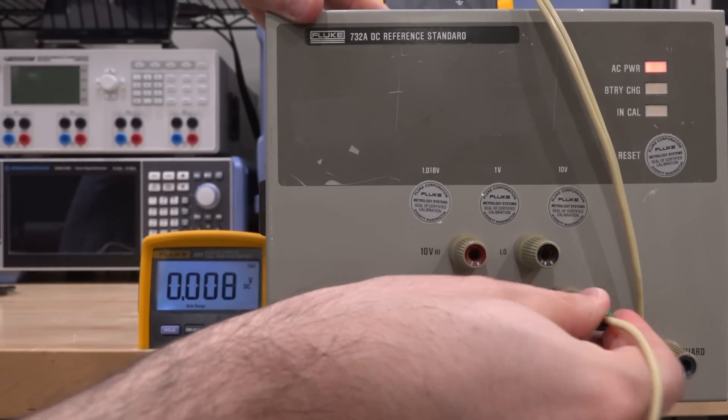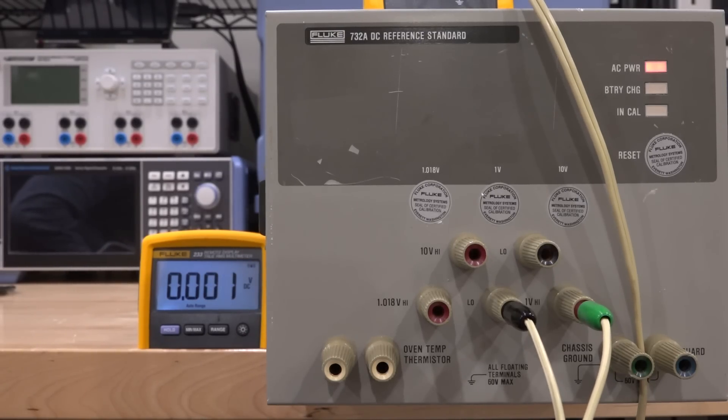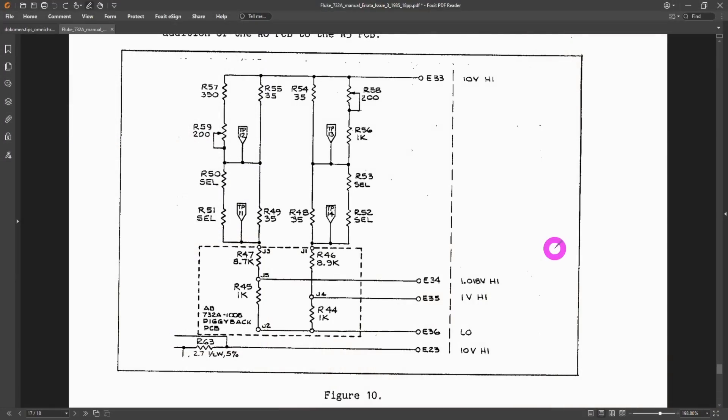Now how could that happen? Well it is possible that the circuitry is damaged and all of that is inside the oven, but let's take a look at the schematic and see if we can shed some light on where else that problem could be. So here's a quick schematic of how these various voltages are derived from the 10 volt. This is the 10 volt high output.